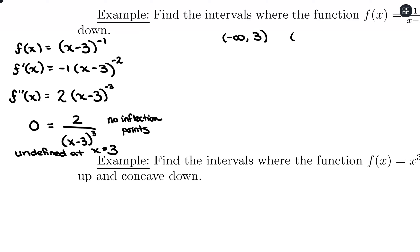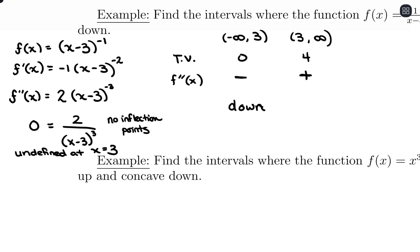Test values: x = 0 for (−∞, 3) and x = 4 for (3, ∞). Evaluating 2/(x − 3)³: at x = 0, we get 2/(−3)³, which is negative. At x = 4, we get 2/(1)³ = 2, which is positive. So (−∞, 3) is concave down and (3, ∞) is concave up. You can check this by looking at the graph of the function.